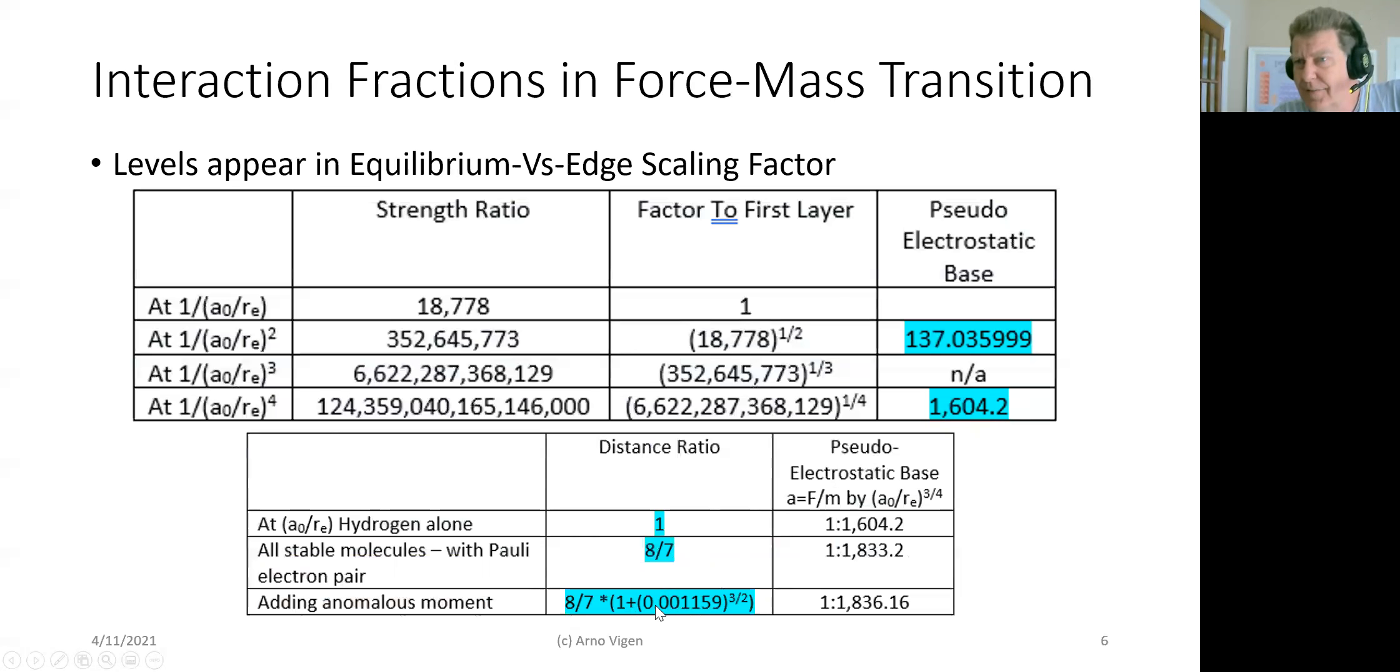Then you have to use the anomalous moment, which is this very tiny factor found by Schwinger and Feynman and Tomonaga. And you get to 1836.1, which is the ratio of the proton mass to the electron mass. It's based upon its position within a field.